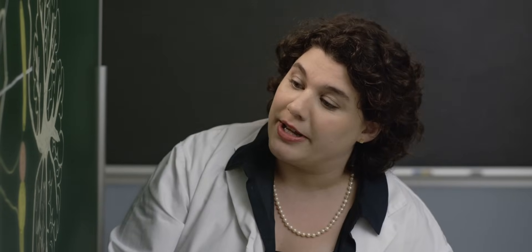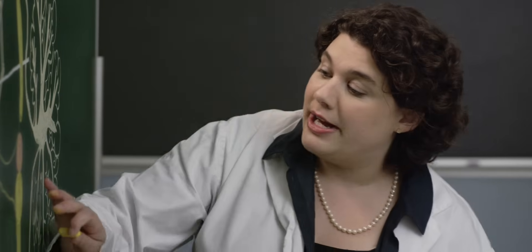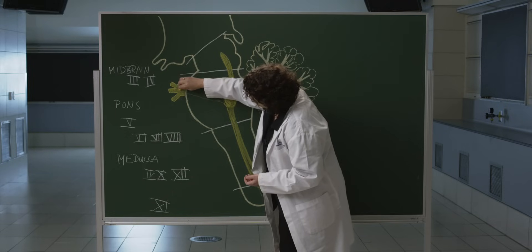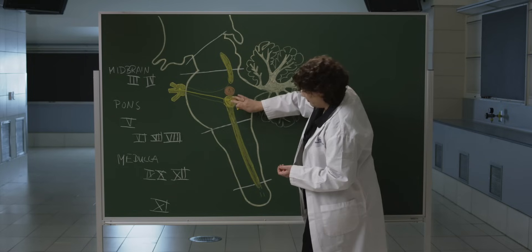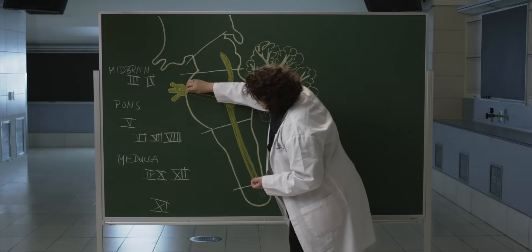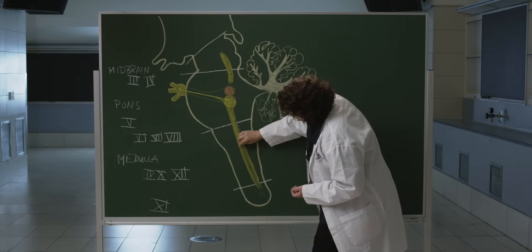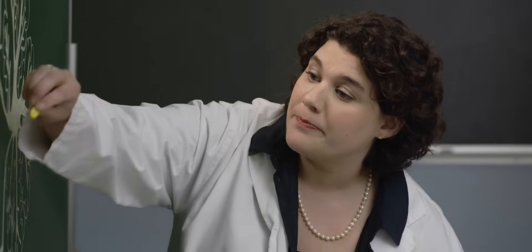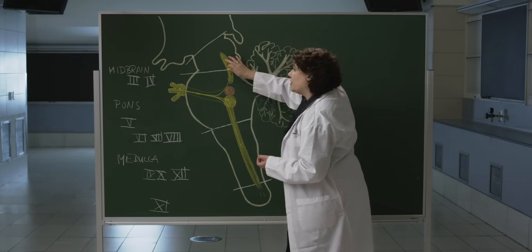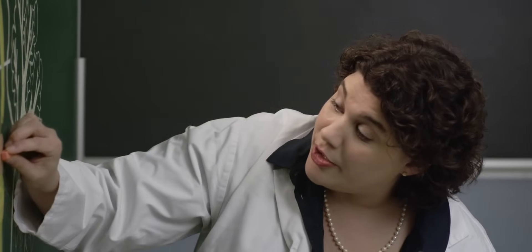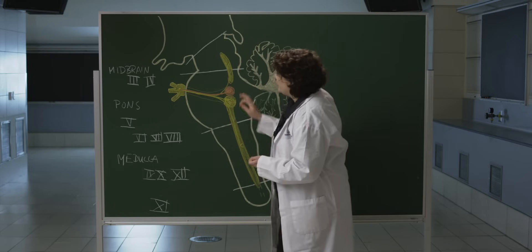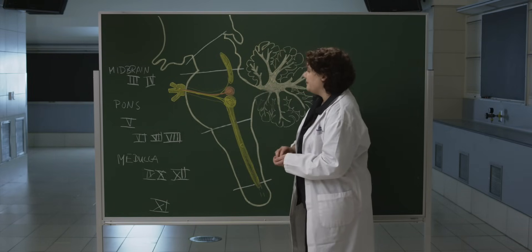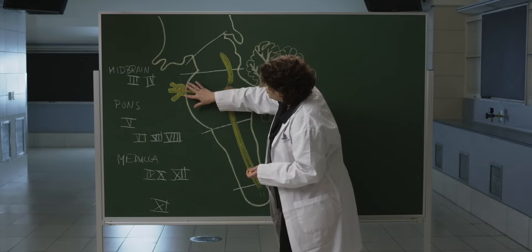Motor input to the muscles of mastication comes from the motor nucleus of five, also located within the pons, just rostral to the sensory nucleus. Sensory fibers have their cell bodies within the trigeminal ganglion, and then go either to the chief nucleus for discriminative touch and vibration, or descend into the spinal trigeminal nucleus where pain and temperature are processed, or go into the mesencephalic nucleus for proprioceptive information. Motor fibers emerge from the motor nucleus and exit through the trigeminal nerve to reach the muscles of mastication. Fibers from all of these different nuclei converge to form one cranial nerve.